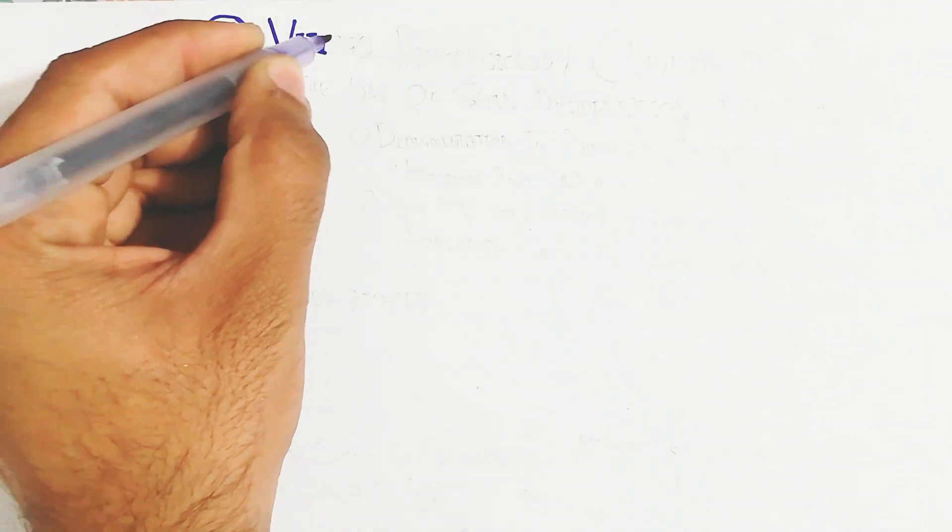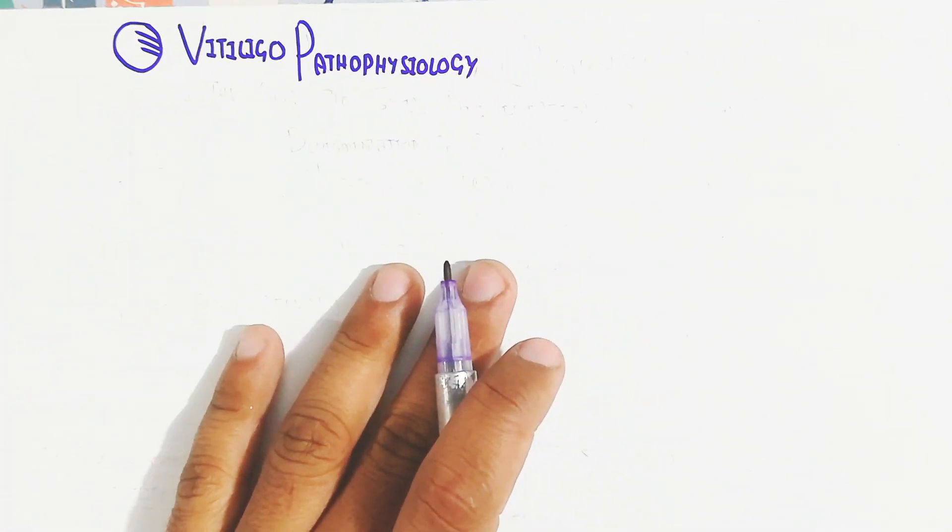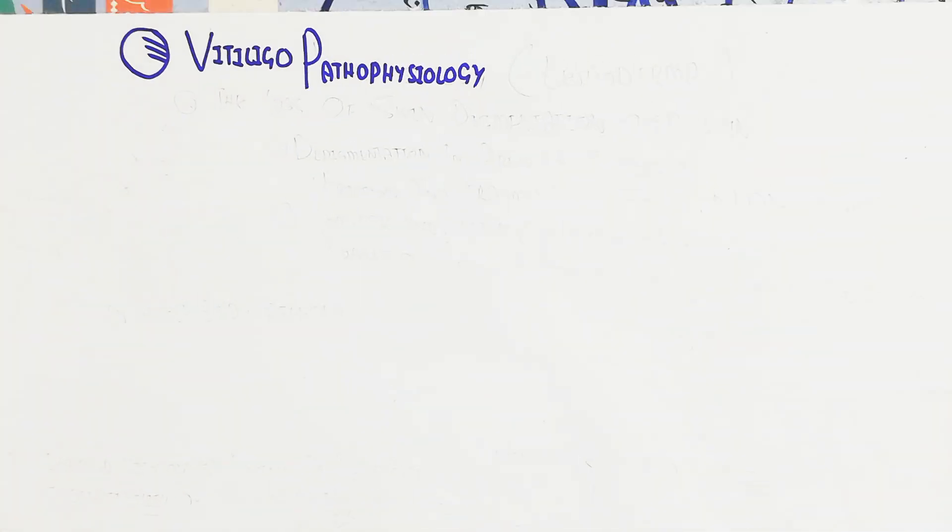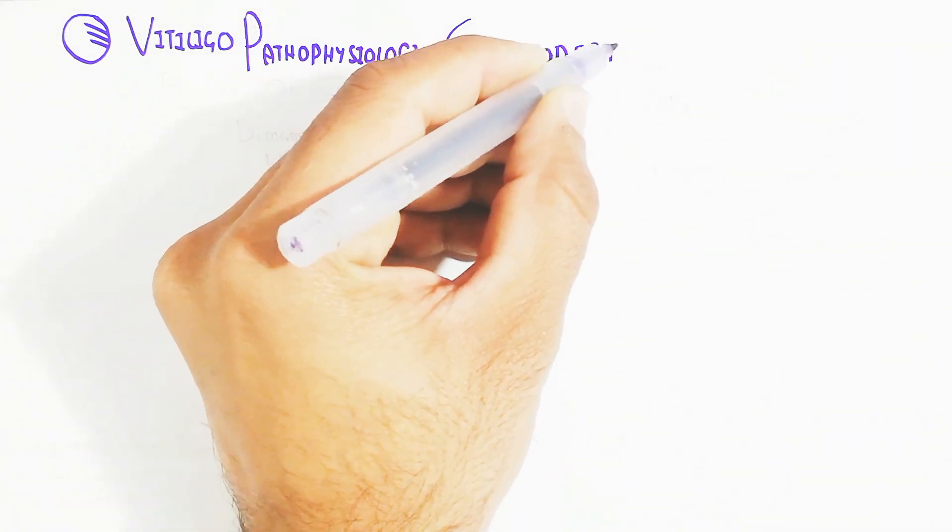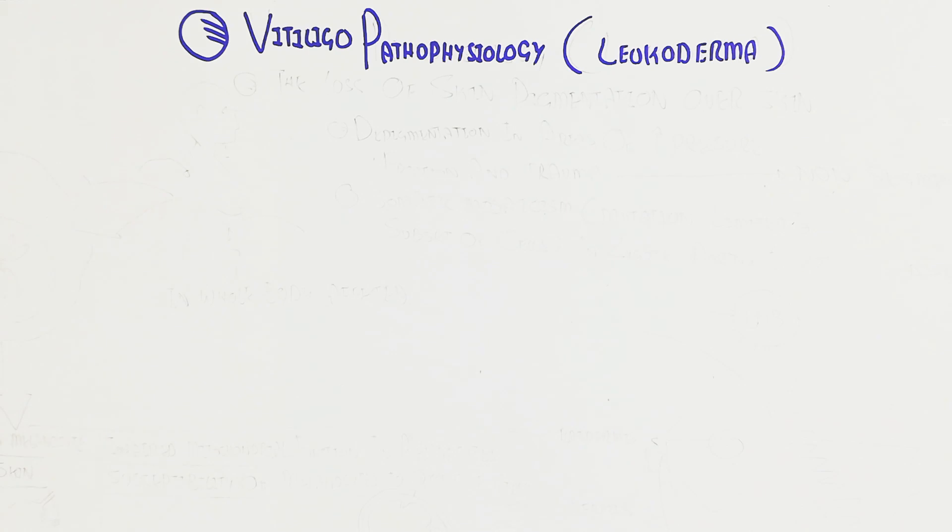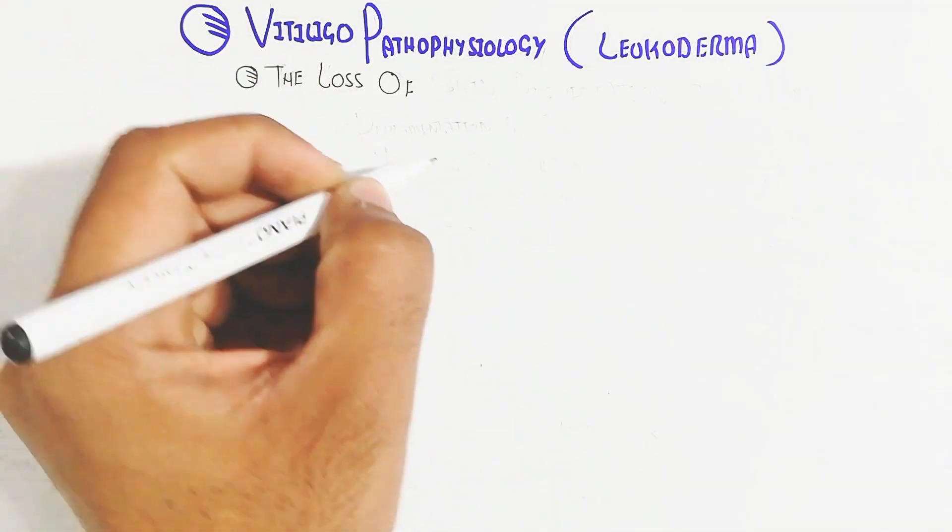Hello, in this video we will understand the pathophysiology of vitiligo, also called leucoderma. Leucoderma is the loss of skin pigmentation.